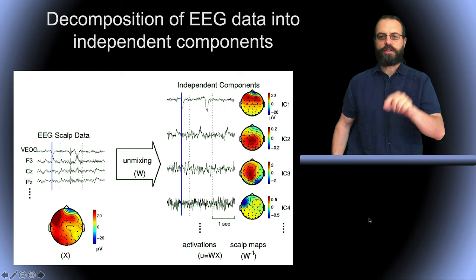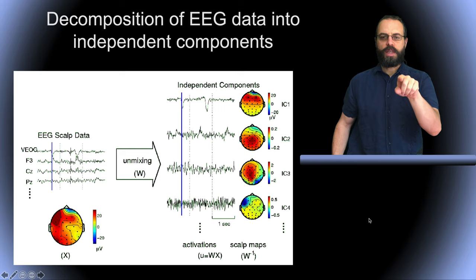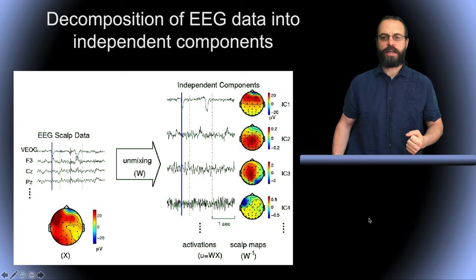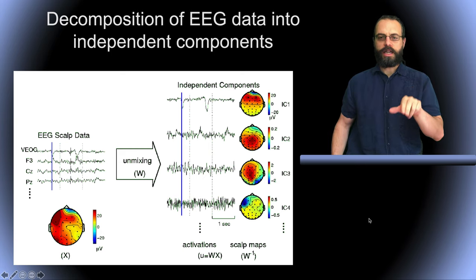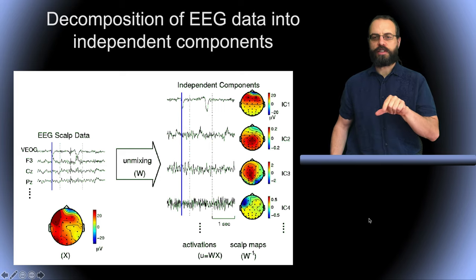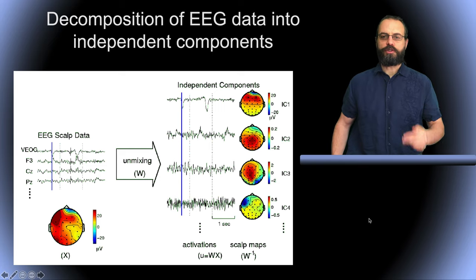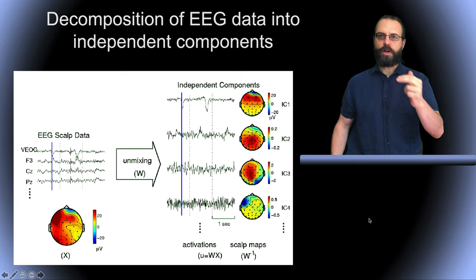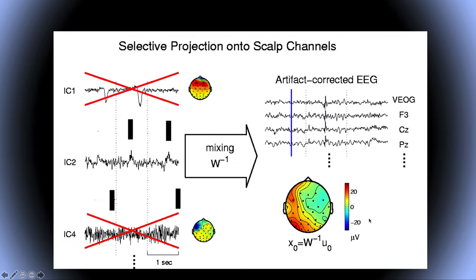The top component here is a blink — we can see the blink very clearly, and the dotted lines indicate stimuli. The second one shows P300 components, so some real brain activity. The fourth one likely represents alpha oscillation in the occipital areas, and IC4 represents muscle activity — very high frequency — that we might want to remove. So in this case we would want to remove component one and component four by simply zeroing out their activity and then applying the inverse transformation to get back the data without these artifacts.